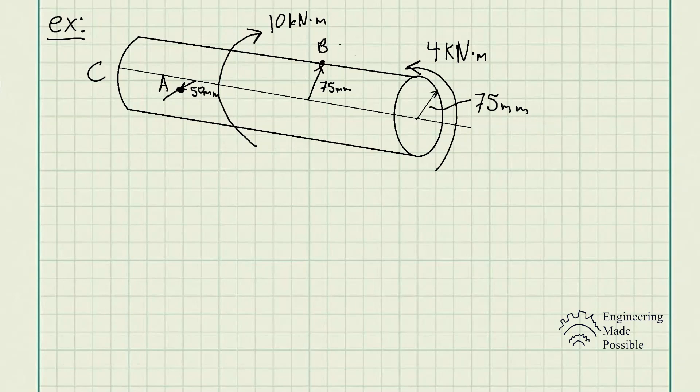As you can tell, they're in opposite directions. Now we're supposed to calculate the shear stresses at point A, which is 50 millimeters from the center of the rod, and point B, which is right at the surface or 75 millimeters from the center because the radius is 75 millimeters.